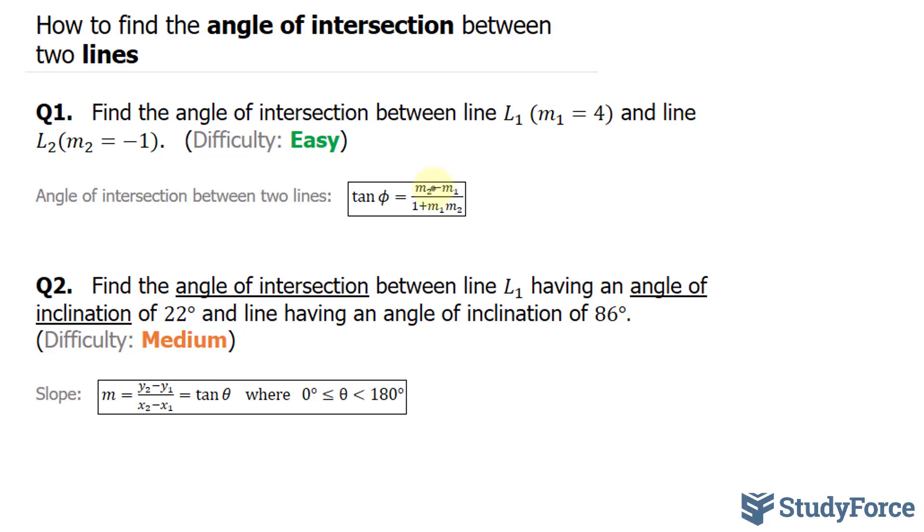We're told what m1 and m2 are, so all we have to do is substitute these values into this formula. m2, as stated in the question, is negative one, and m1, as stated in the question, is four.